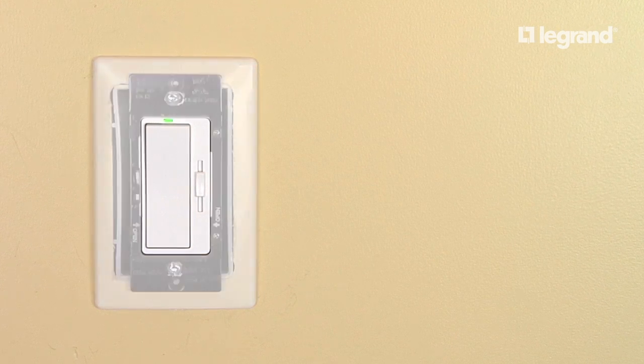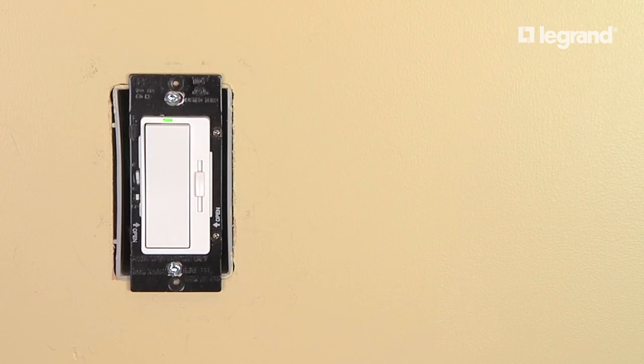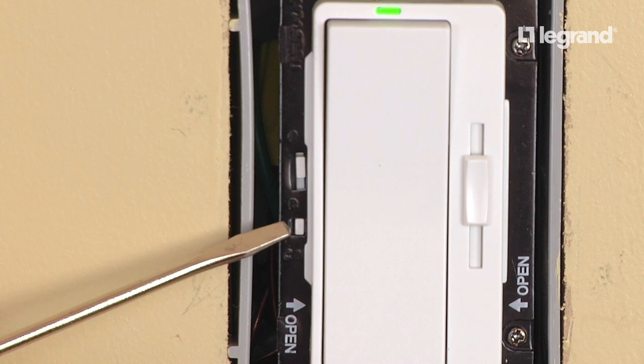When the wall plate is removed, you can see that on the left side of the dimmer mounting strap there is a small calibration button.